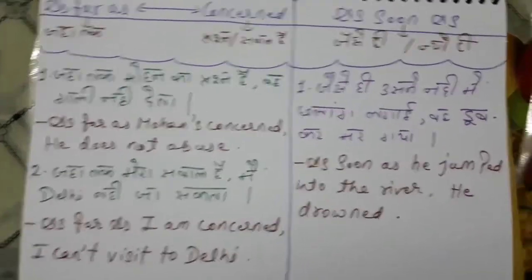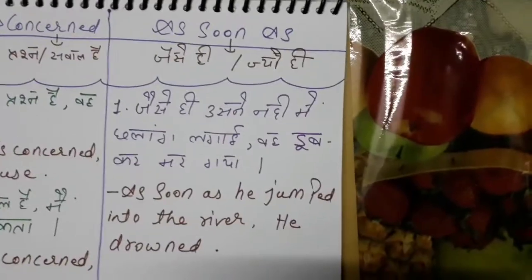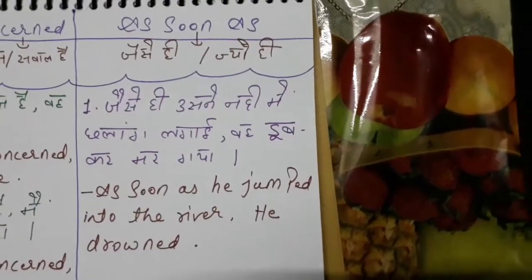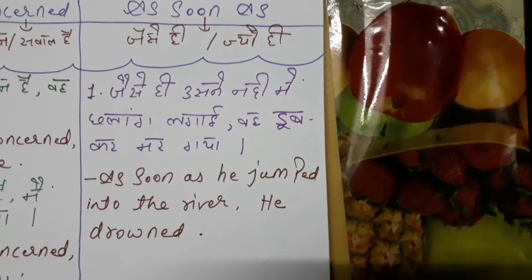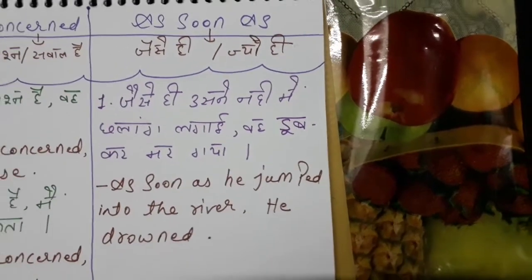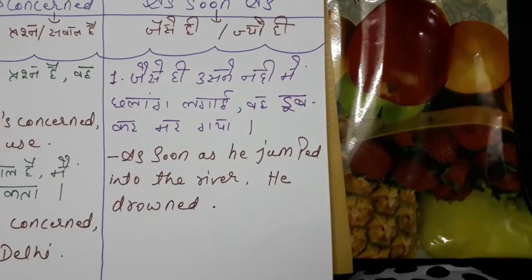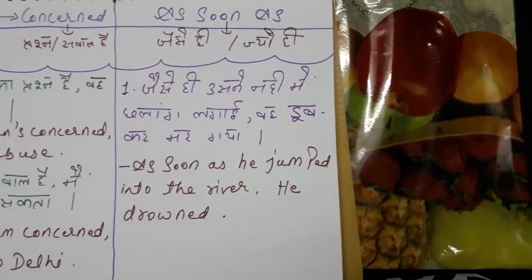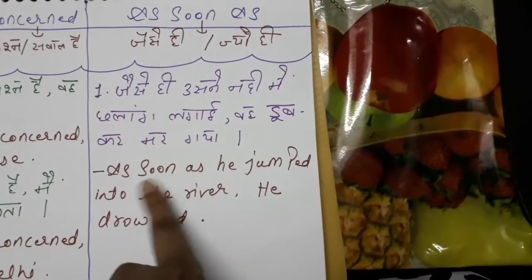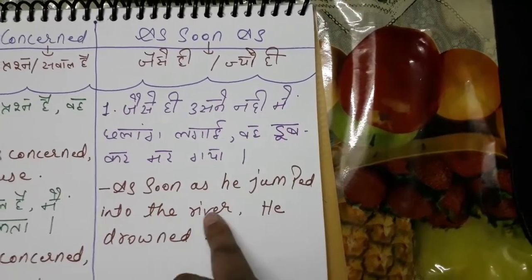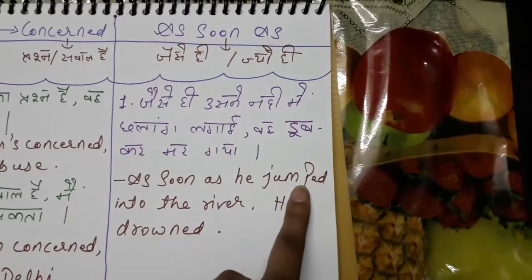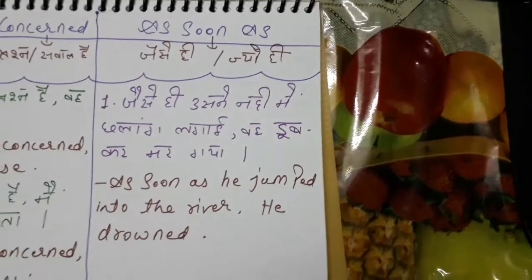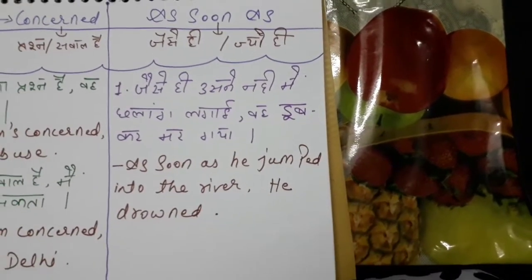Now the next conjunction — 'as soon as'. The Hindi meaning of 'as soon as' is 'jaise hi' or 'jyonhi'. In a sentence, when you see this kind of wording, 'as soon as' is used. For example: 'jaise hi wo paani mein kuda' — 'as soon as he jumped into the water'. Since the jump already happened, it's in past form.